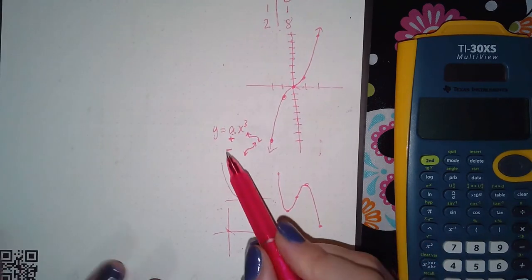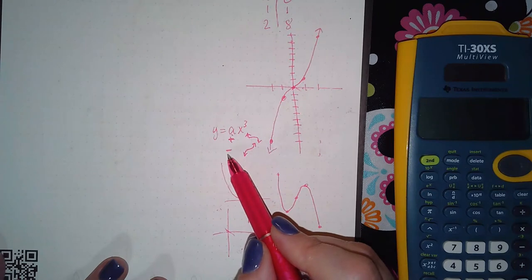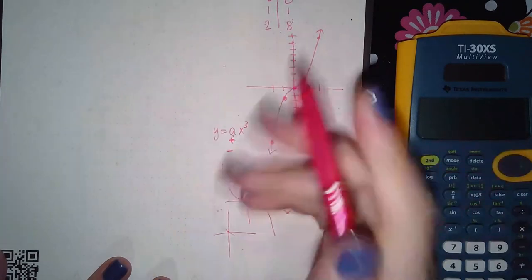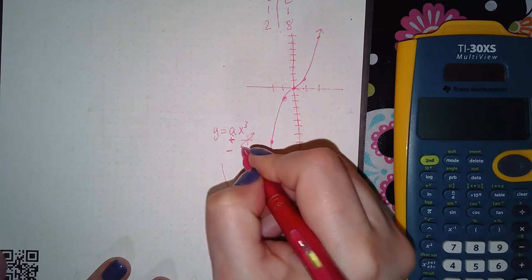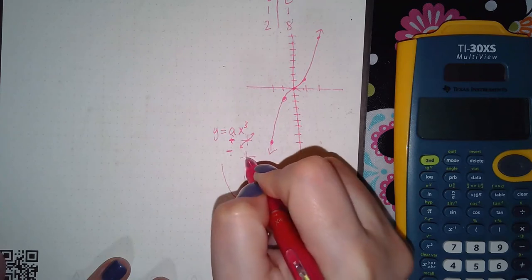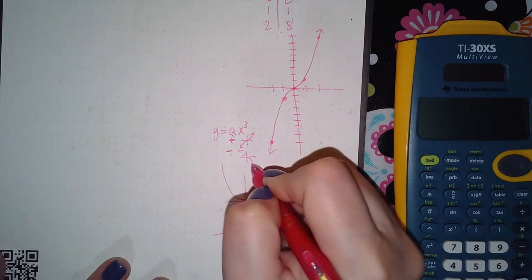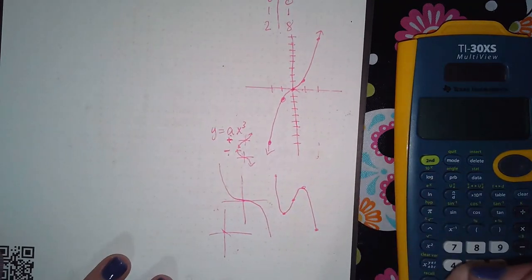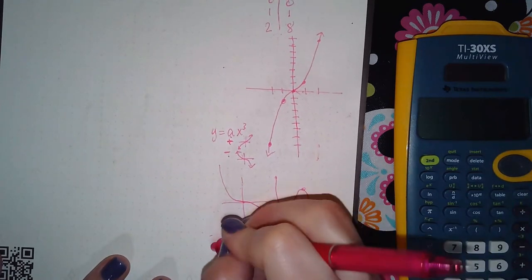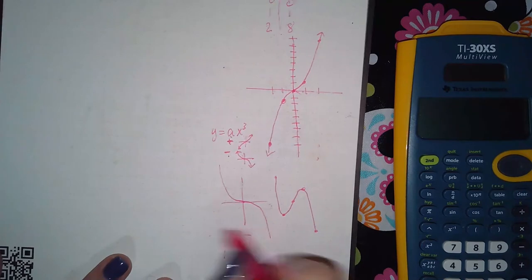Then if that number in the front were negative, it would look the opposite. So positive means it should go up in the positive direction, down in the negative direction. If the number is negative in the front, then it does the opposite, so it goes down in the positive direction.